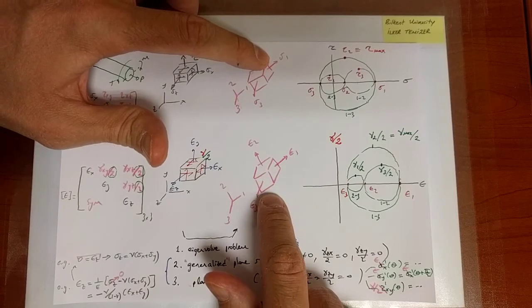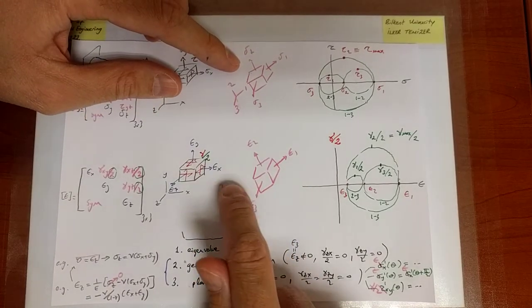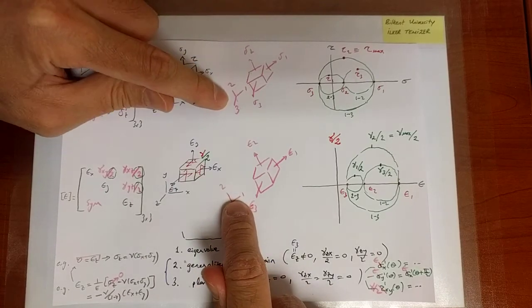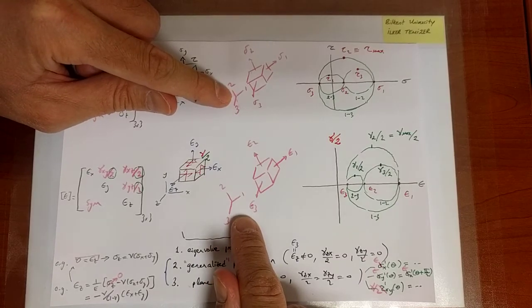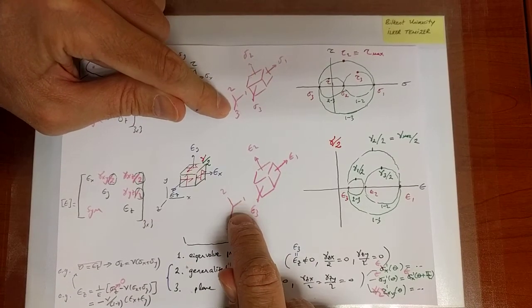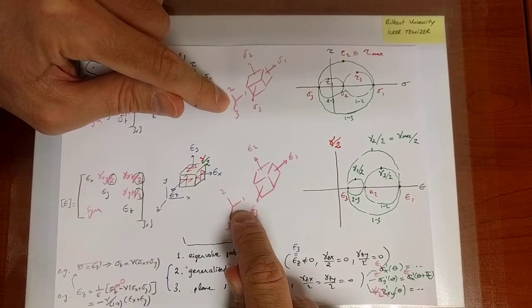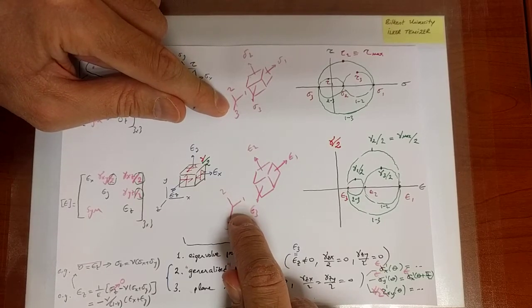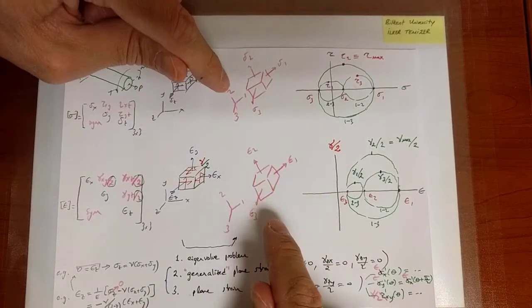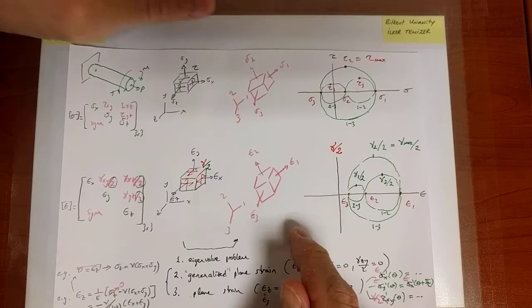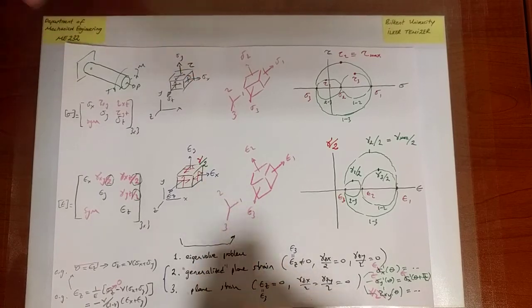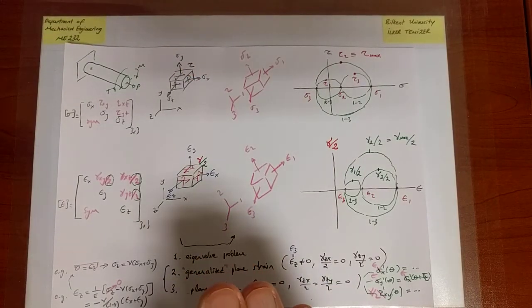One, the principal directions of strain match with the principal directions of stress. We're showing this without proof, but it turns out that if you were to calculate individually these two pictures, the principal directions would be exactly the same. This you can easily try for some general scenario. You'll see that they are the same. That's the first observation, and that's why I've drawn these orientations in the same fashion. One is aligned with one, two is aligned with two, three aligned with three.